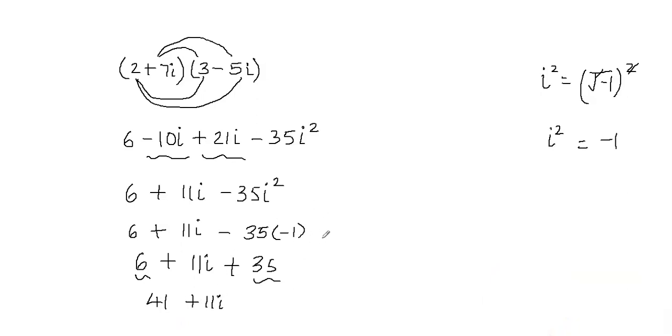Now when you write your final product, the final product should be in the form of a plus or minus bi. This is the general form of complex numbers, and your final answer should be in the form of a plus or minus bi, where a is the real part and bi is the imaginary part.